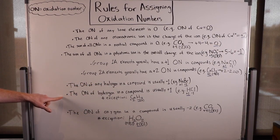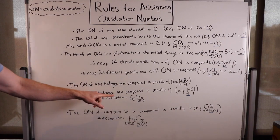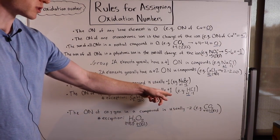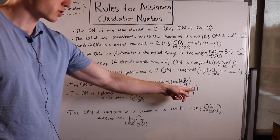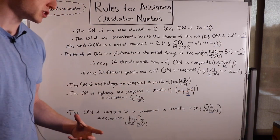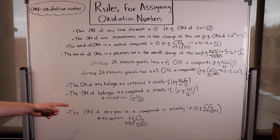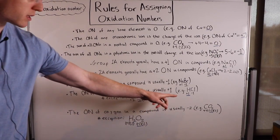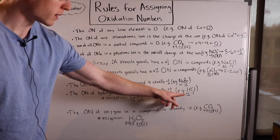The oxidation number of hydrogen in a compound is usually plus one. For example, in hydrochloric acid — HCl — the oxidation number of hydrogen is plus one.